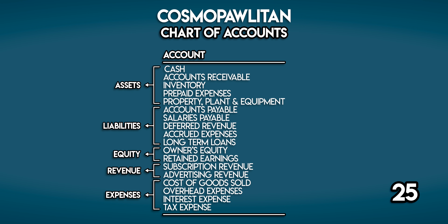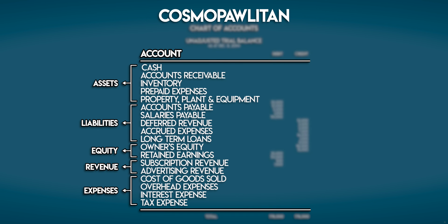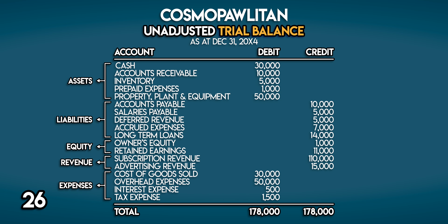Accounts in the chart of accounts tend to be arranged by type: assets, liabilities, equity, revenue, and expenses. Each account has a description and a unique code to help identify it. If we put the numbers back in, we have a trial balance — an accounting report showing the balances in every business account at a point in time. Debits go on the left and credits on the right, and the total of the debit column must match the total of the credit column.